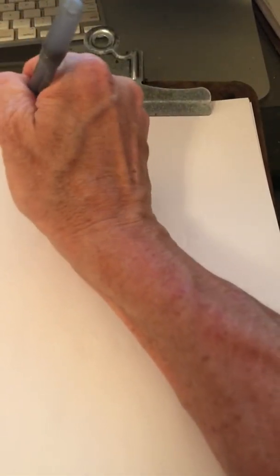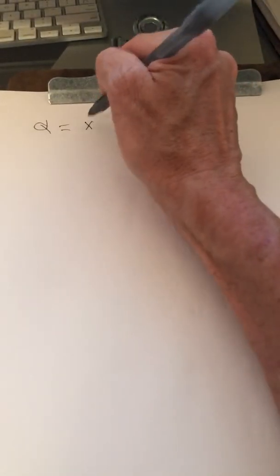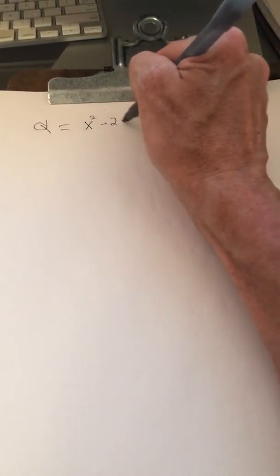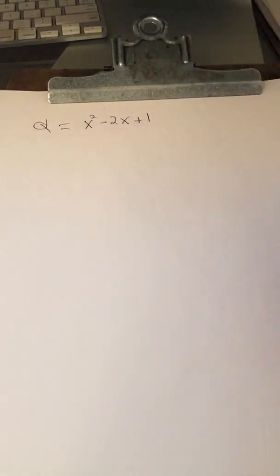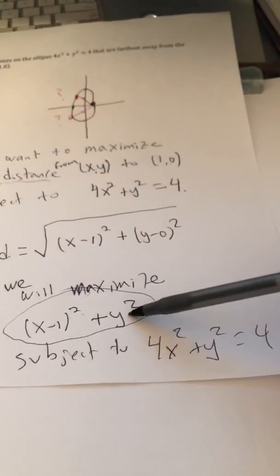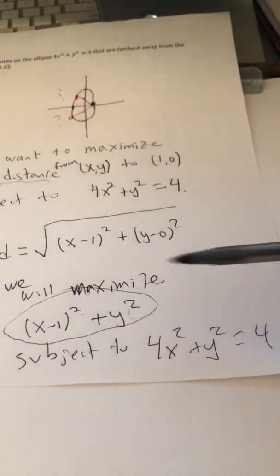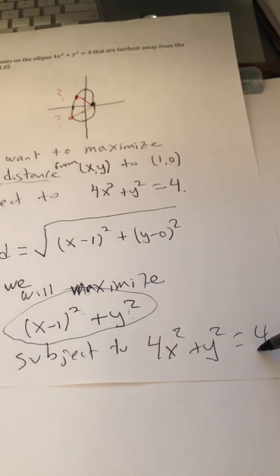So, Q is, let's see, (x minus 1) squared, that is x squared minus 2x plus 1. And we have plus y squared. But if I solve for y squared, what I get is 4 minus 4x squared.